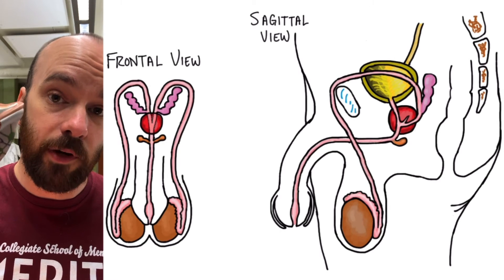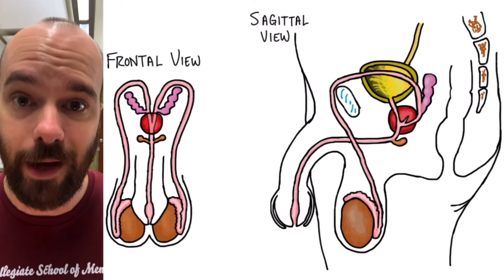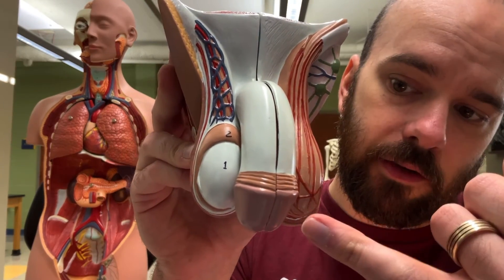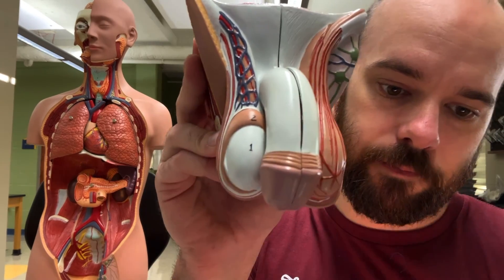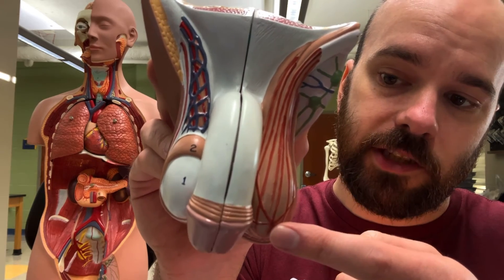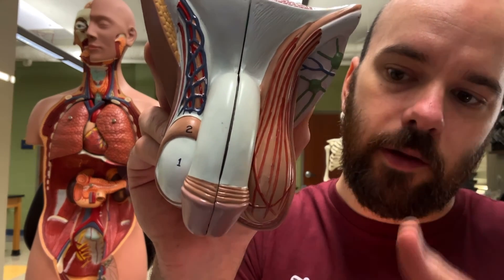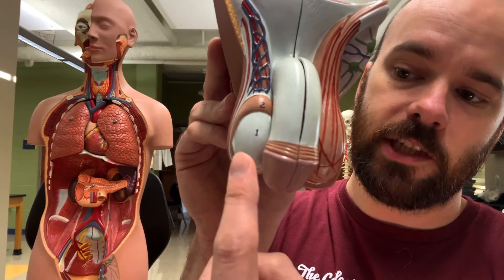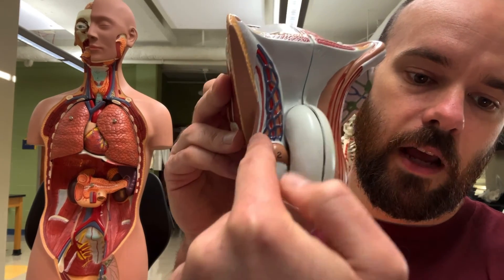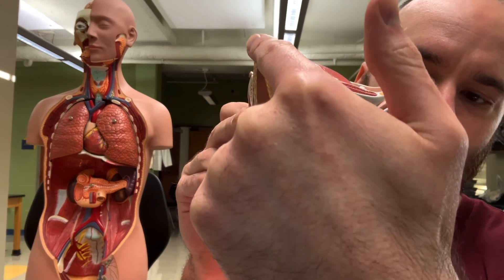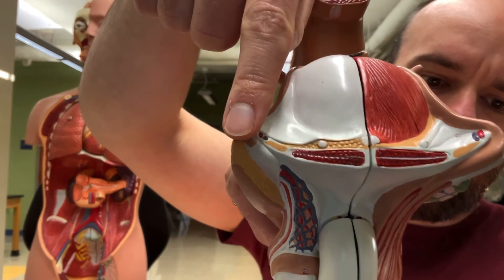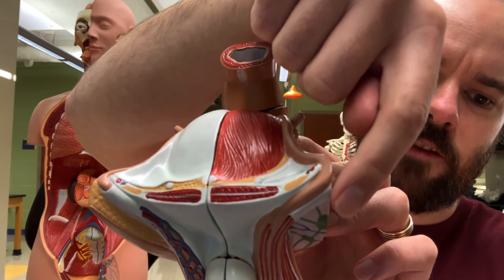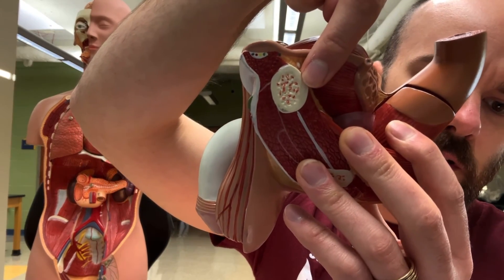Now let's take a look at the torso model's reproductive system and see what these structures look like three-dimensionally in the body. Starting with the external structures: here we have the glans penis and the shaft of the penis. We have the scrotum surrounding the testes, and the epididymis just above the testes. In the scrotum, you'll notice red lines which are muscles that will pull the testes up closer to the body or let them go farther away, depending on the temperature. Sperm cells grow in the testes, mature in the epididymis, and travel up the vas deferens, which you can see on both sides running in front of the pelvic bone.